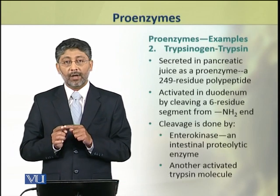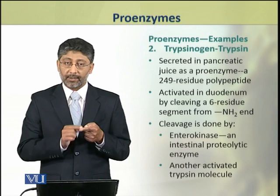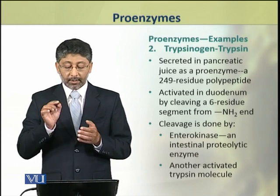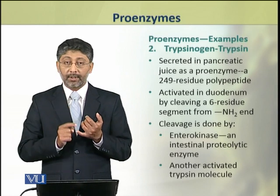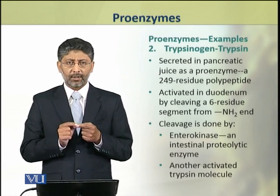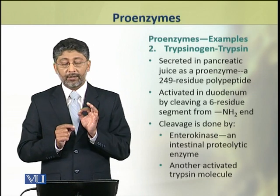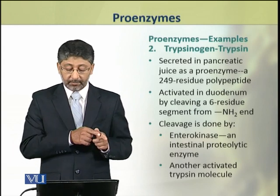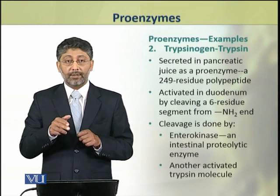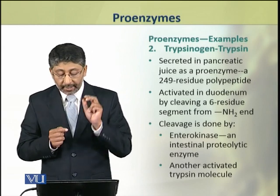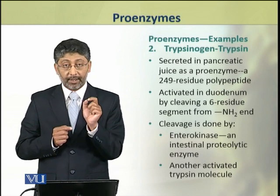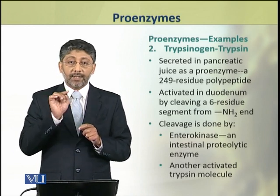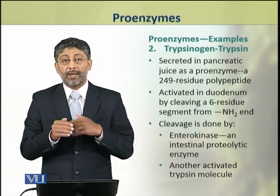The second example of a proenzyme is trypsinogen, which is activated to form trypsin. Trypsinogen is secreted in pancreatic juice as a proenzyme. It is a polypeptide which contains 249 residues. It is activated in the duodenum by cleaving it. A 6-residue segment is cleaved from the amino terminal end. After cleaving this 6 amino acid residue, it becomes activated.